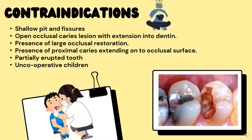Moving to contraindications: shallow pit and fissure sealant is contraindicated. Open occlusal caries lesion with extension into dentin is contraindicated. Presence of large occlusal restoration, presence of proximal caries extending onto the occlusal surface, partially erupted tooth, and uncooperative children — in all these cases, pit and fissure sealant should be avoided.